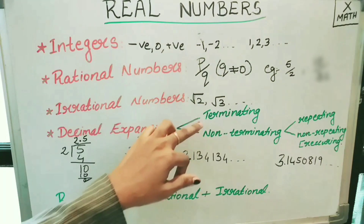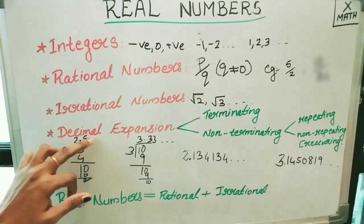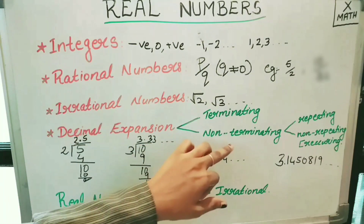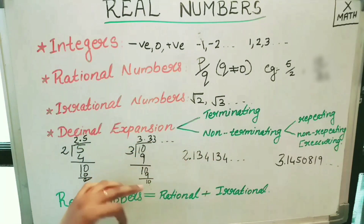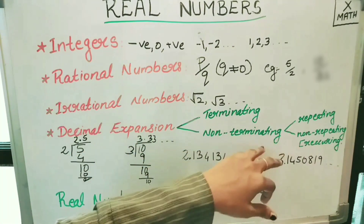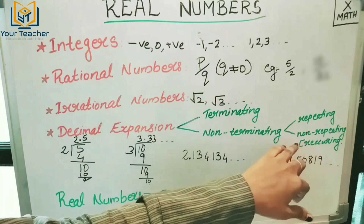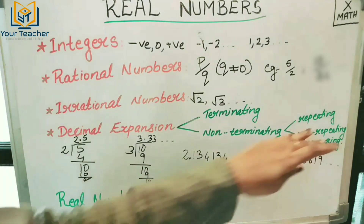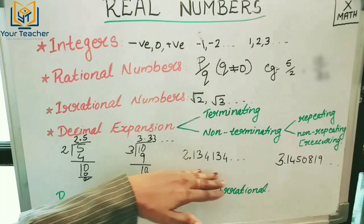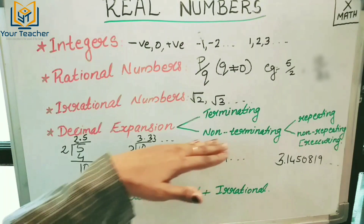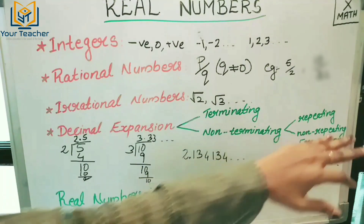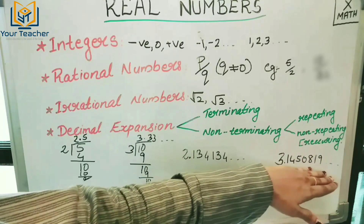Decimal expansion is of two types: Terminating and Non-Terminating. Terminating means the remainder is zero. Non-Terminating is again divided into two types: Repeating and Non-Repeating. Repeating means the characters repeat — the numbers repeat the decimal expansion. Non-terminating repeating decimal expansion repeats numbers in a regular detail.